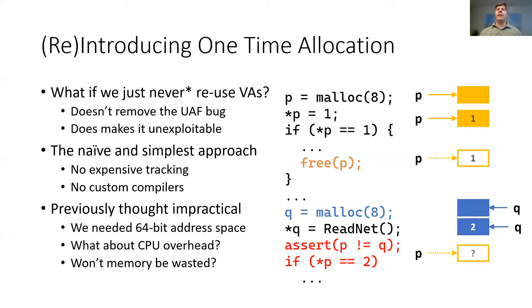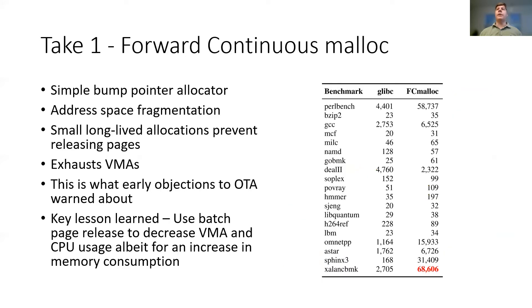We will demonstrate that concerns surrounding CPU and memory overhead are manageable through careful system design. Our first OTA implementation was Forward Continuous Malloc, FCMalloc, which implemented a simple bump pointer scheme. In essence, each new allocation has a higher address than any previous one. New pages were mapped as necessary, and pages were unmapped once all allocations containing that page were free. As predicted, this first attempt suffered from unacceptable CPU and memory overhead. In particular, small but long-lived allocations prevented freeing otherwise empty pages. Additionally, this solution has substantial memory fragmentation issues. Those same long-lived allocations create islands in the virtual memory space tracked in virtual memory allocation structures in the Linux kernel.